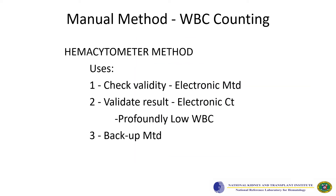The manual method for WBC counting is also known as the hemocytometer method. Today, it is believed that it still has its purpose. It can be used to check the validity of an electronic method, to validate results for profoundly low WBC counts from an electronic machine, and it can also serve as a backup method.